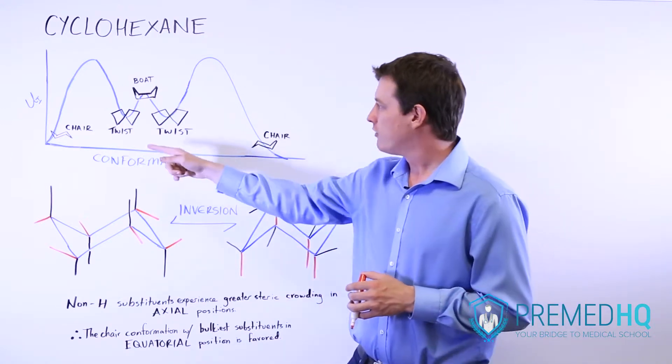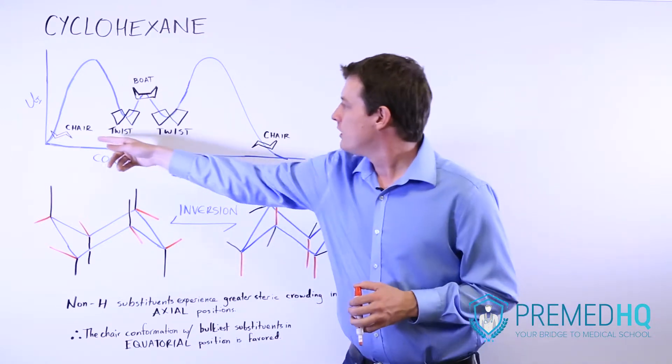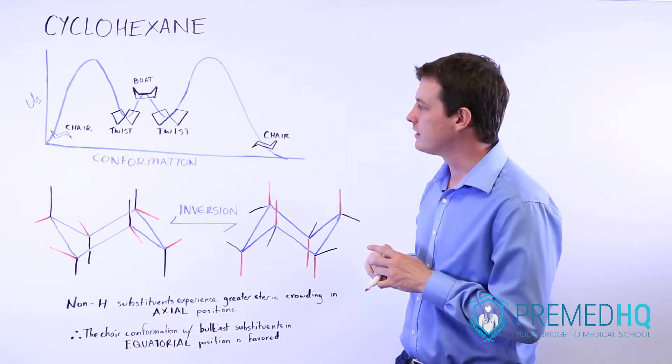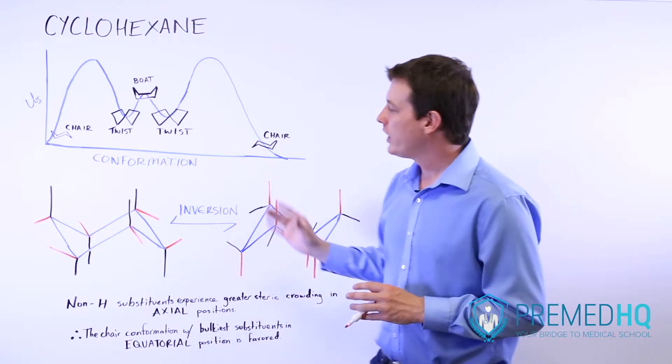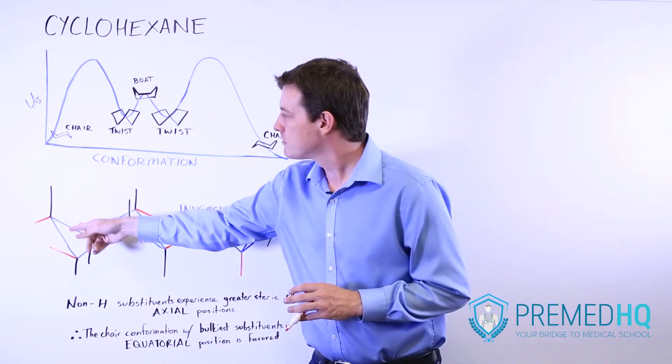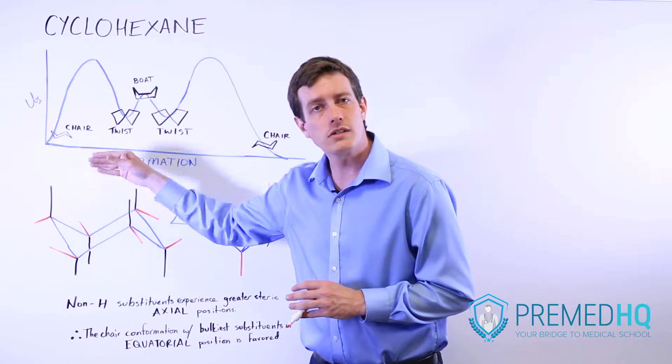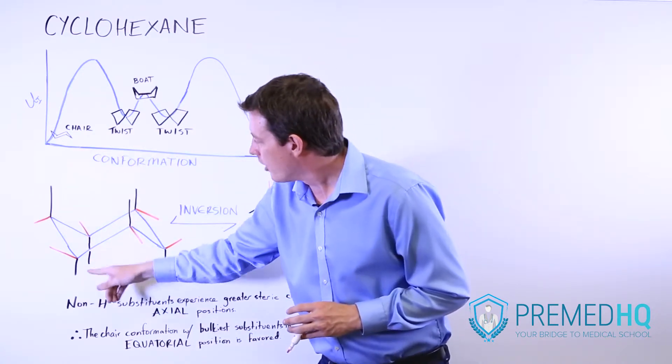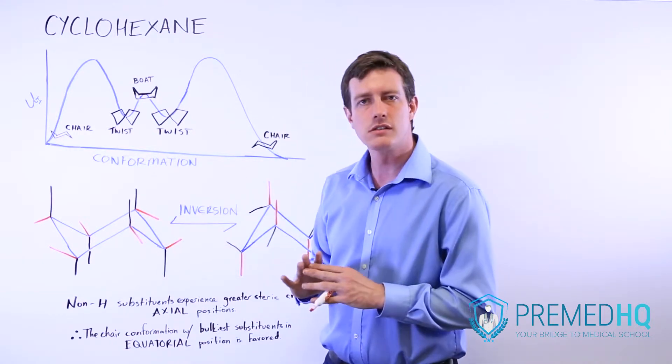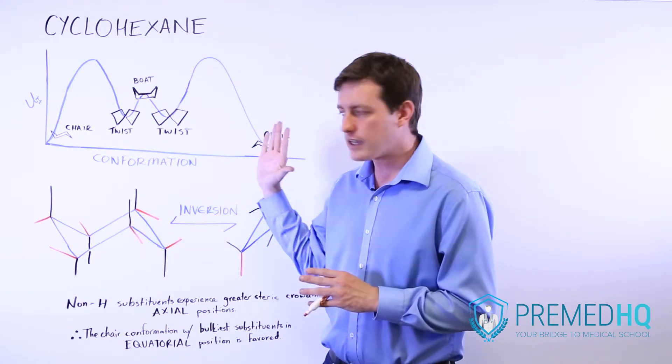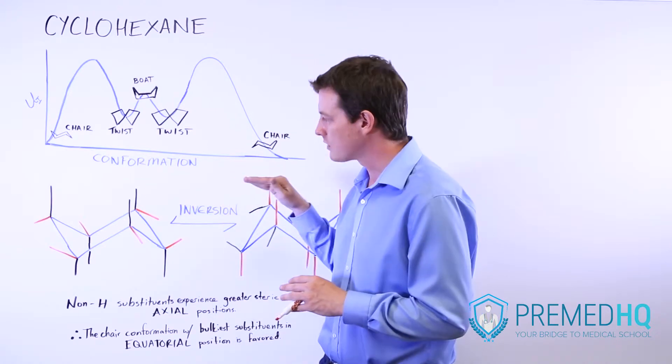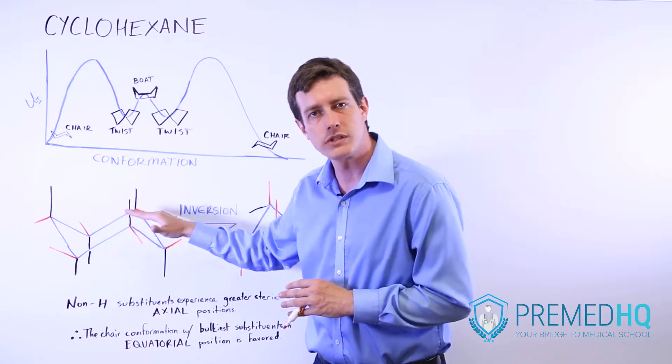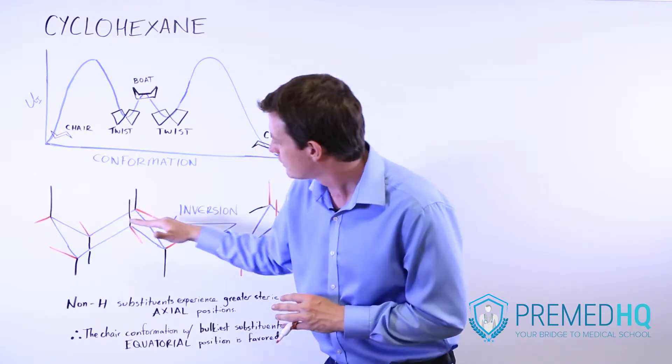When you're dealing with the chair form, you can have the chair invert from one to the other. And it will often do this spontaneously. And when that happens, you have some substituents that are described as equatorial, whereas others are described as axial. The vertical ones are the axial substituents because those are considered to be on the axis, whereas the equatorial ones are more horizontal, more like an equator, which is a horizontal position near the center of the structure.